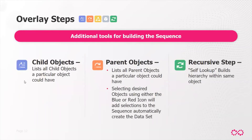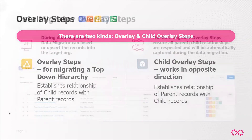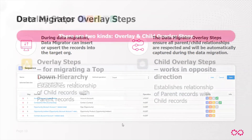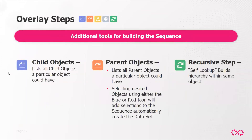There are some additional buttons you'll use when building the sequence. This is what the sequence builder looks like — each row is a data set you'll be creating. The first button, the blue button, shows child objects — a list of all child objects a particular object could have. You select the desired related objects and the tool automatically creates the data set.